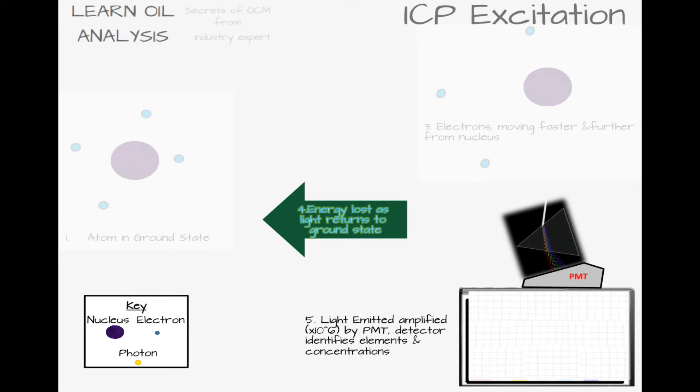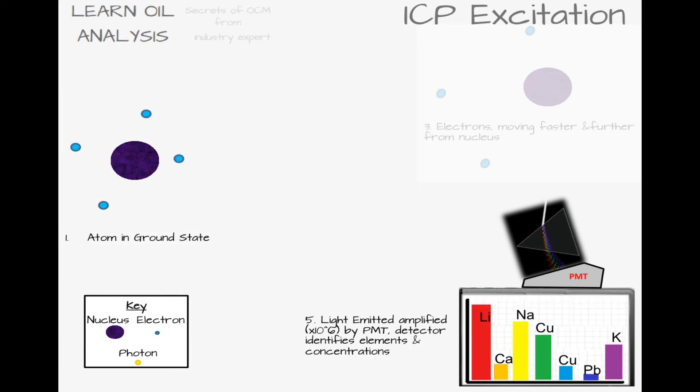With calibration, quality control, and ICP algorithm data, the reading is converted to the concentration of each element, usually given in ppm, or milligrams per kilogram.